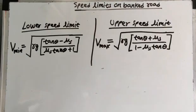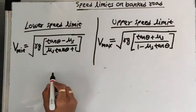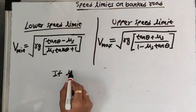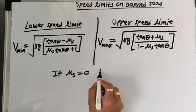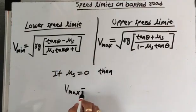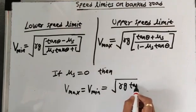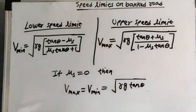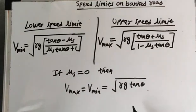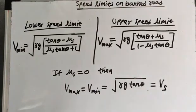If we do not consider the force of friction, that is, if mu_s equals zero, then both equations give V_max = V_min = root Rg tan theta, which is the most safe speed of the vehicle on a curved banked road. This equation is independent of the mass of the vehicle.